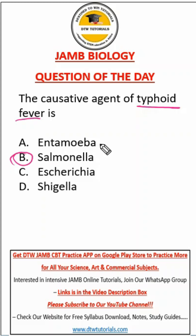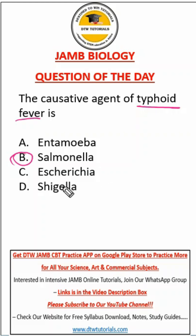Amoeba is a protozoa — it's a protozoa that causes dysentery. Salmonella is a bacteria. Escherichia coli is also a bacteria that stays in your intestine and also causes dysentery and diarrhea.